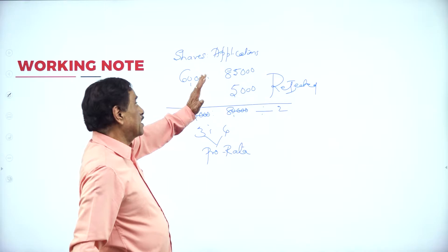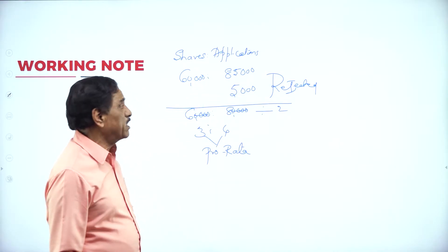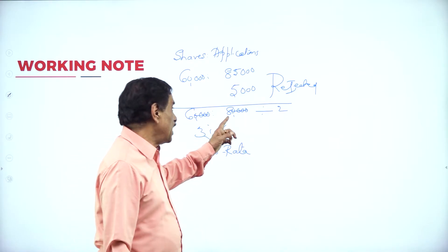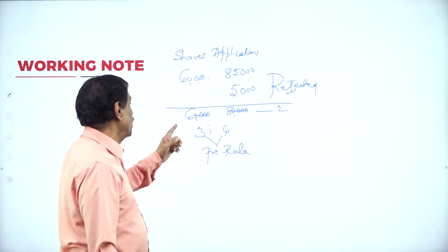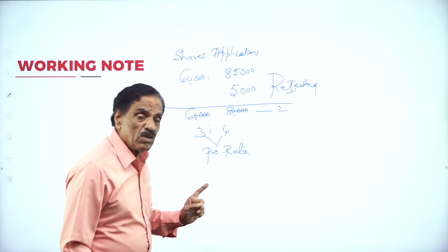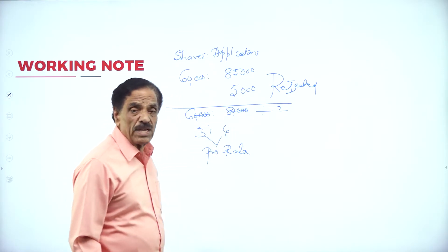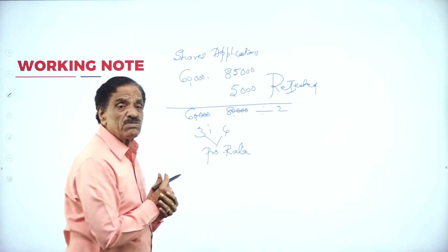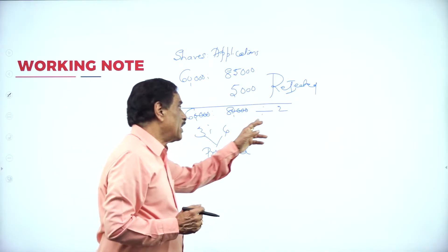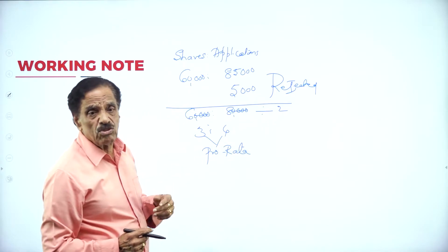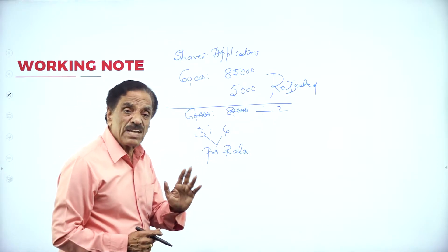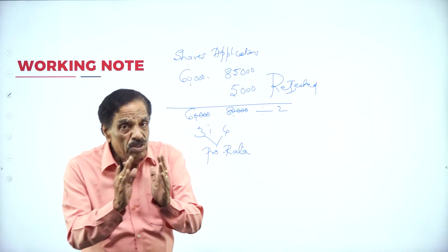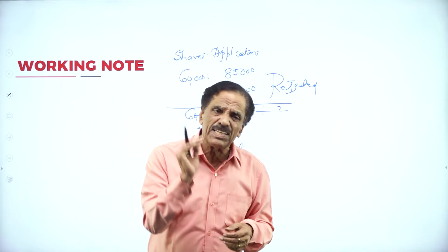To repeat: 60,000 shares available, 85,000 applications received, 5,000 rejected, 80,000 accepted for 60,000 shares. That is 60,000 to 80,000 — simplify, cancel the zeroes, 6 to 8 divided by 2: they are in the ratio of 3 to 4, which is the pro-rata adjustment. Proportionately adjusted.